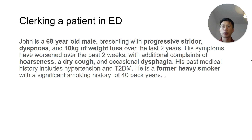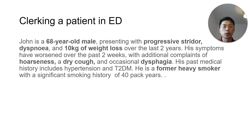Say you're in ED and you've got a patient named John — a 68-year-old gentleman. He presents with progressive stridor, dyspnoea, and 10 kilos of weight loss over the last two years. He has worsening symptoms over the last two weeks including associated hoarseness, dry cough, and dysphagia. His past medical history includes hypertension and type 2 diabetes, and he's a former heavy smoker.